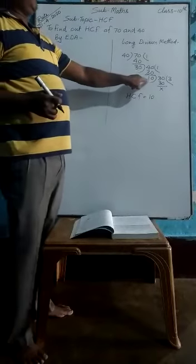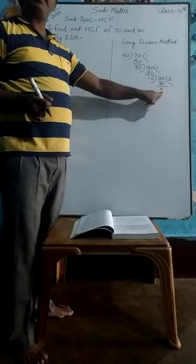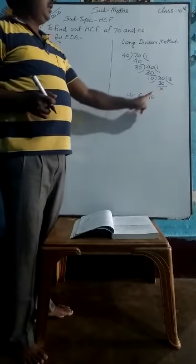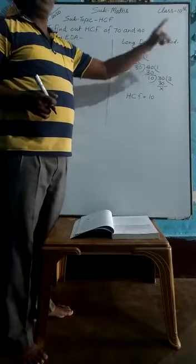This is the last divisor by which you have got remainder as 0. That is the HCF. This method is the long division method.